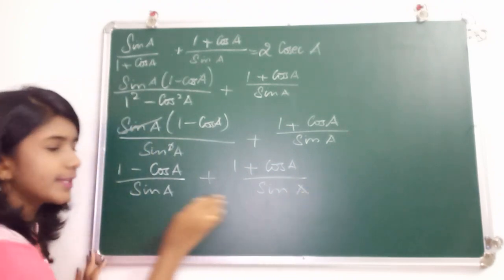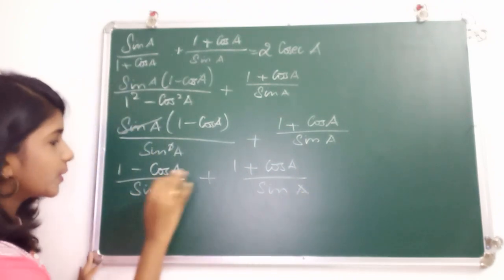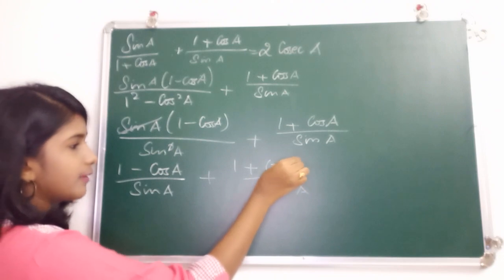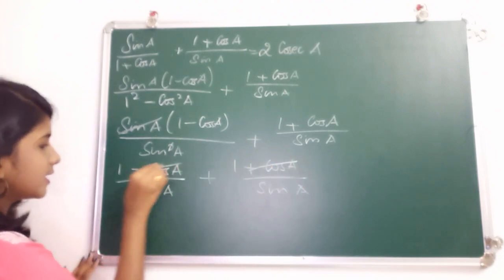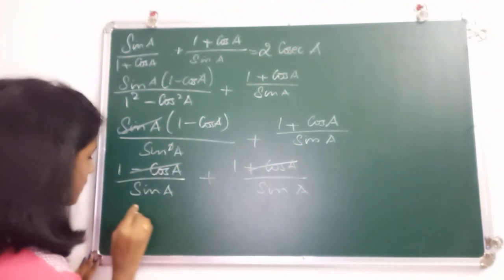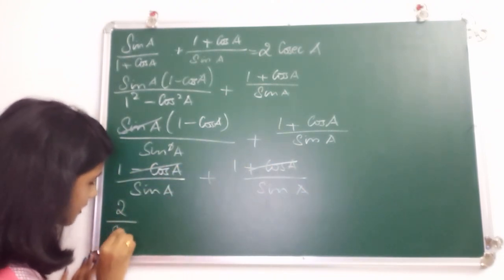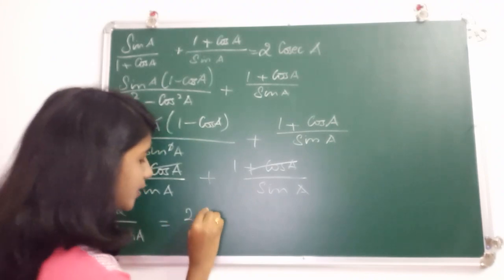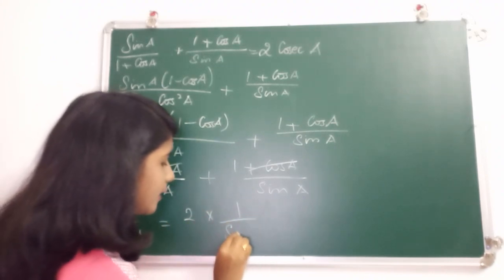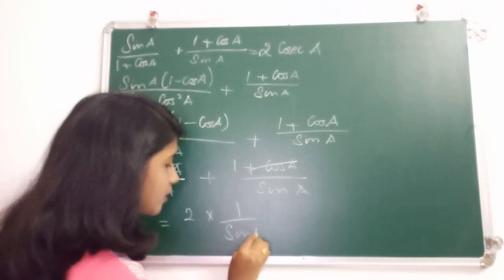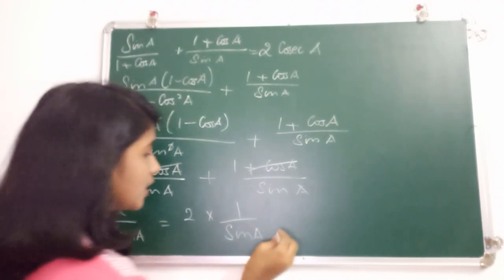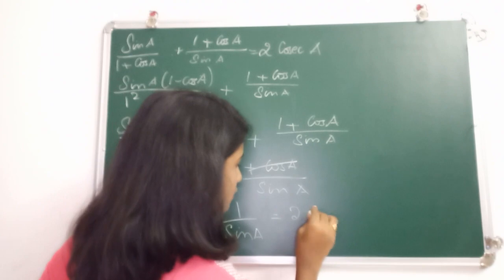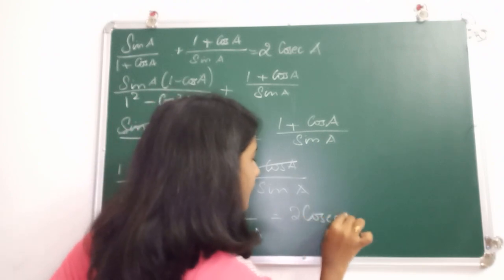Since the denominators are the same, we combine: minus cos A and plus cos A cancel each other. So we get 1 plus 1 over sin A, which is 2 over sin A. This can be written as 2 times (1/sin A). Since 1/sin A is cosec A, we get 2 cosec A, matching the RHS.